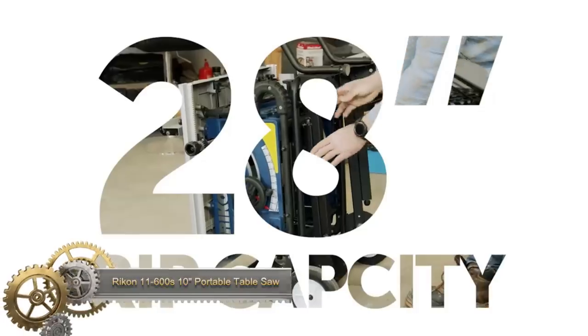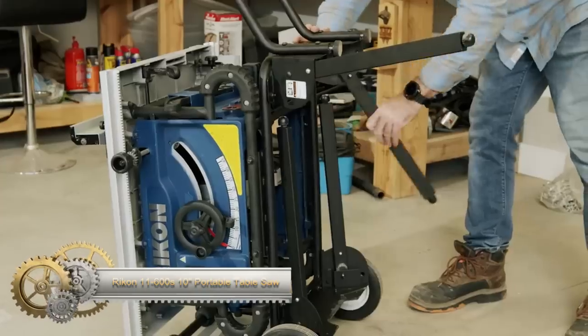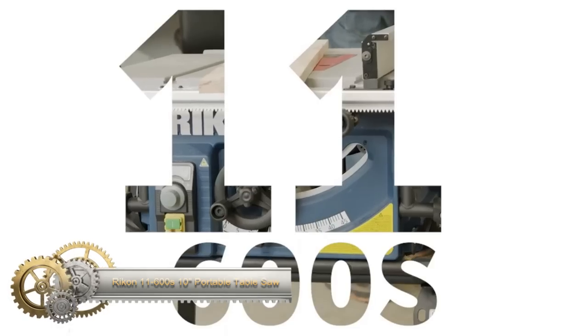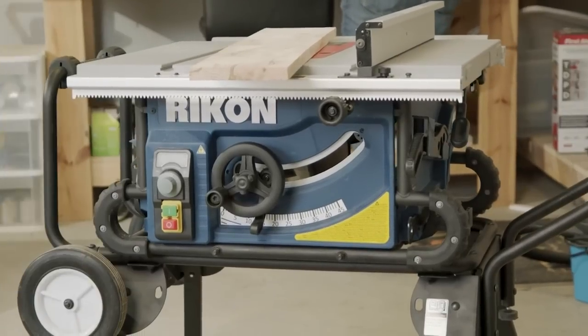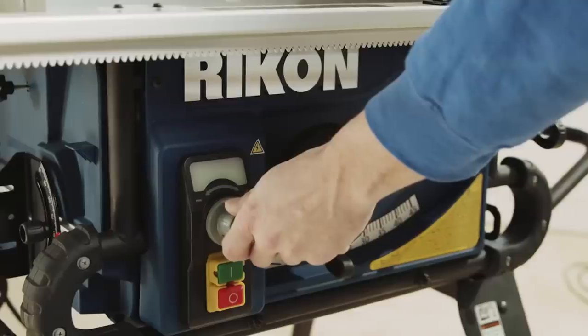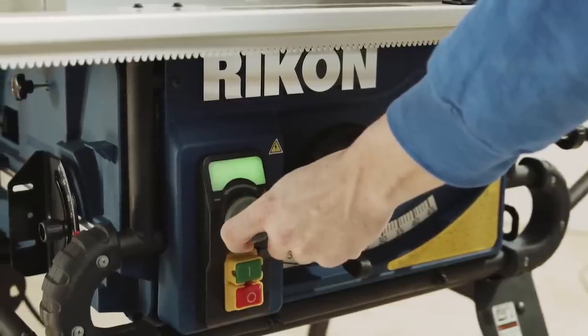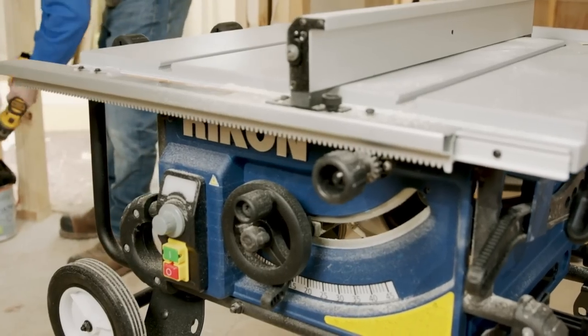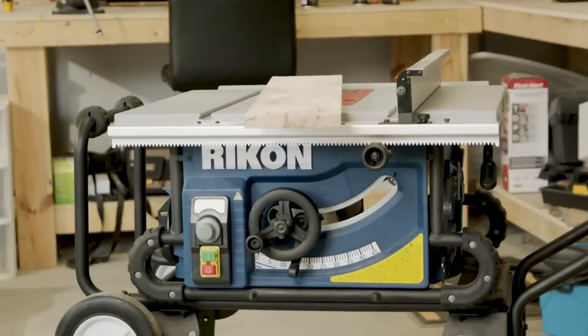The Rikon 11600's variable speed 10-inch portable table saw is a potent and flexible saw, ideal for both domestic and professional environments. It comes with a 2-horsepower motor that can deliver up to 4,200 revolutions per minute, enabling cuts through diverse materials.